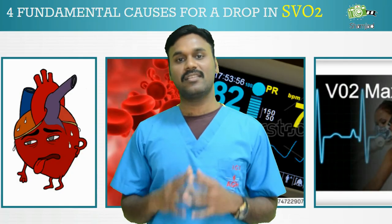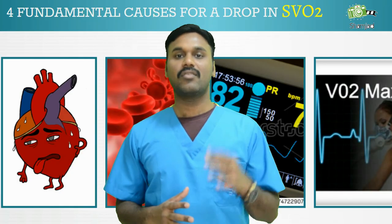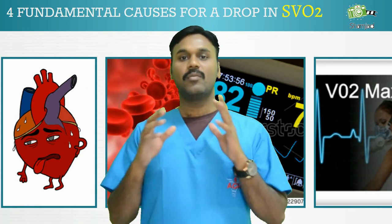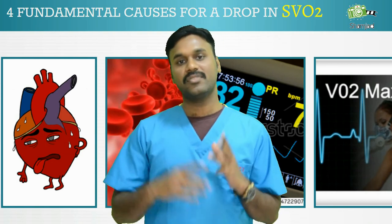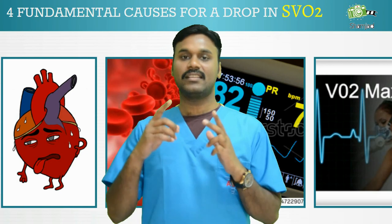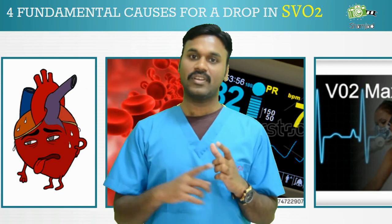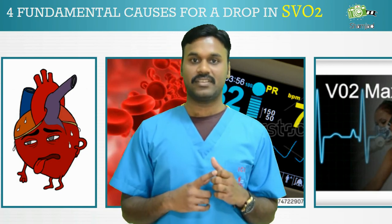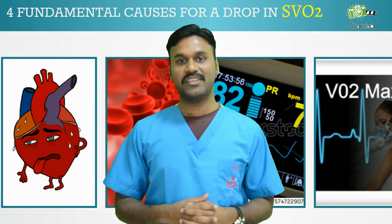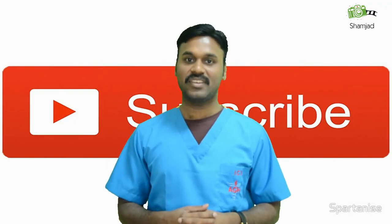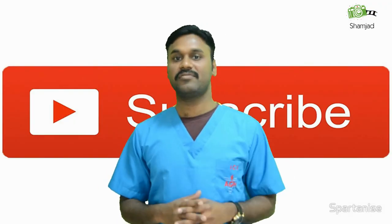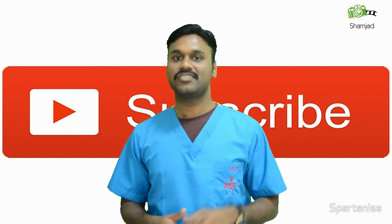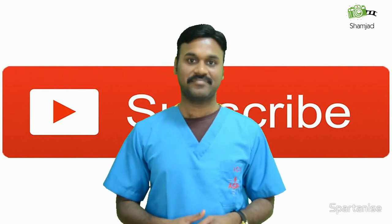There are four fundamental causes for a drop in mixed venous oxygen saturation: poor cardiac output, low hemoglobin, low SpO2, and increased oxygen consumption exceeding oxygen delivery. I hope you enjoyed the class. Thanks for watching, and don't forget — if your subscribe button is still red, just click on it and share with your friends.